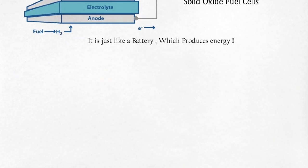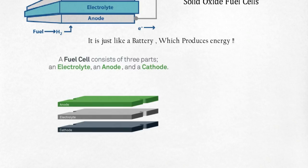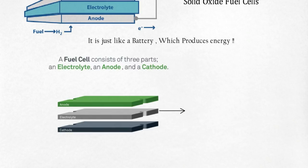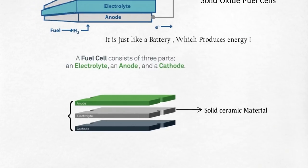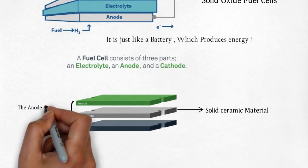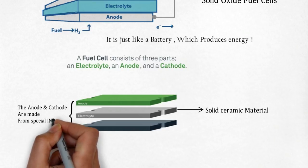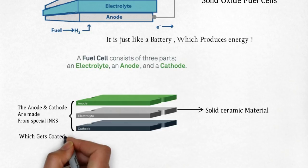A fuel cell consists of three parts: an electrolyte, anode, and cathode. The electrolyte can be fluid or solid ceramic material, like sand SiO2. The anode and cathode are made from special inks which get coated on the surface of the electrolyte. An electrochemical reaction takes place which converts fuel and air into electricity.